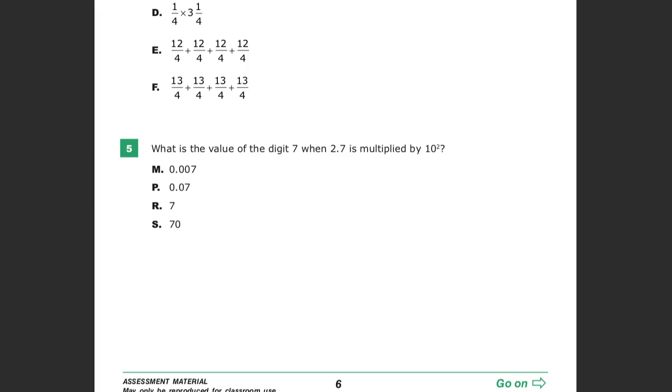What is the value of the digit seven when 2.7 is multiplied by 10 to the second power, or 10 squared?